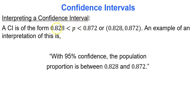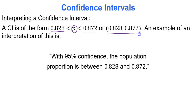A confidence interval can be expressed in inequality notation: write the lower bound, then P, then the upper bound with less-than signs separating them — for example, 0.828 < P < 0.872. This is called trilinear inequality form. Alternatively, write the interval as a lower and upper bound separated by a comma in parentheses — that's interval notation form. An example written interpretation is: with 95% confidence, the population proportion is between 0.828 and 0.872.